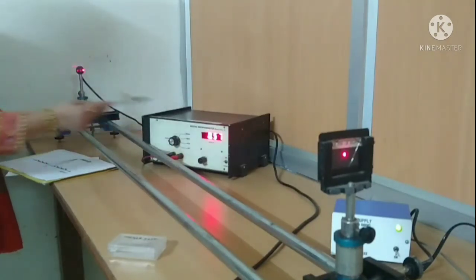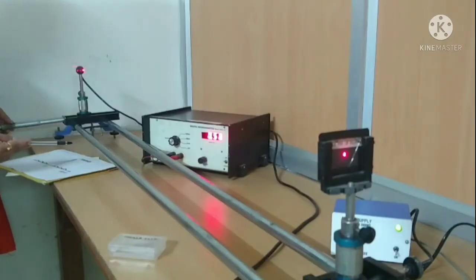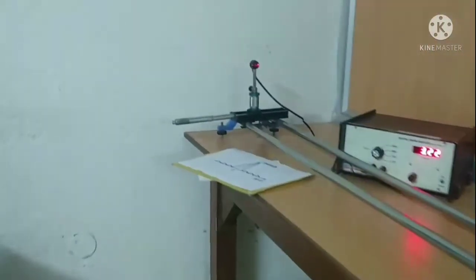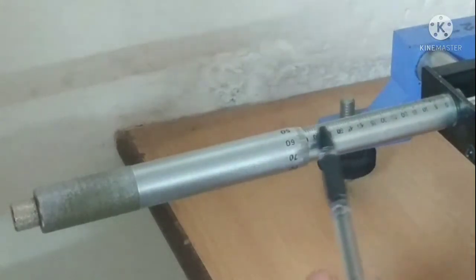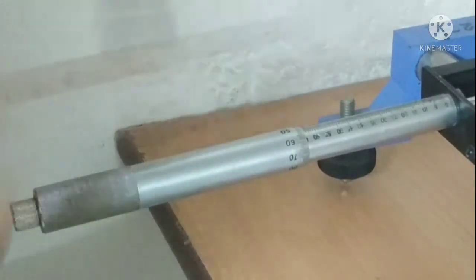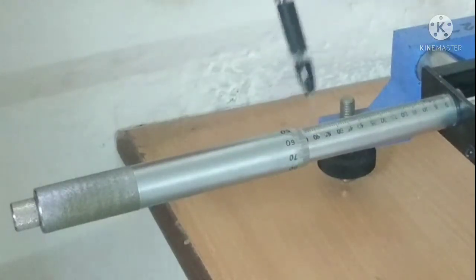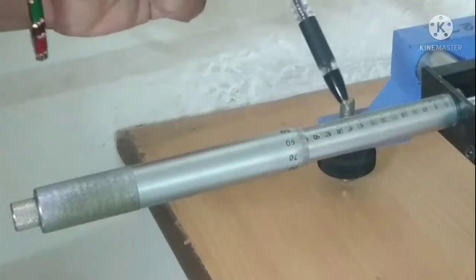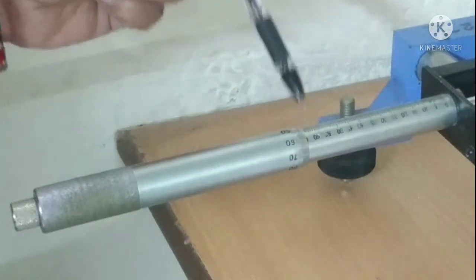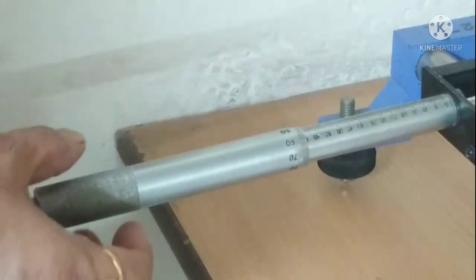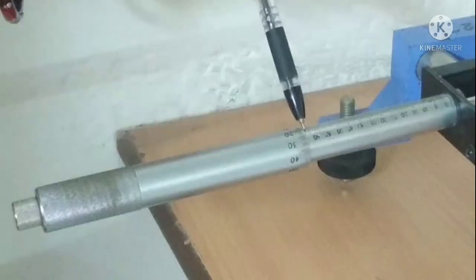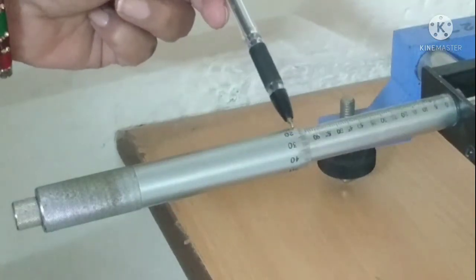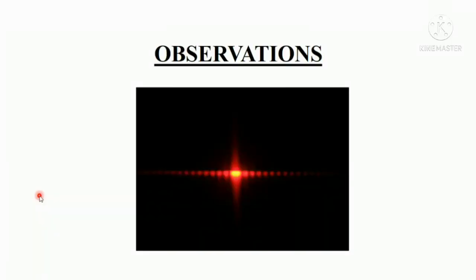Then plot a graph of intensity versus distance and note down the distance between the two first minimas on either side of the central maxima — that will decide the width of the central maxima beta. The micrometer screw is shown here in zoom position. We can see the main scale and the circular scale. We take the reading as we do in case of a screw gauge: note the main scale reading, then whichever division of the circular scale matches the reference line is the circular scale reading. Multiply the circular scale division by the least count and add it to the main scale reading — that gives the position of the detector.